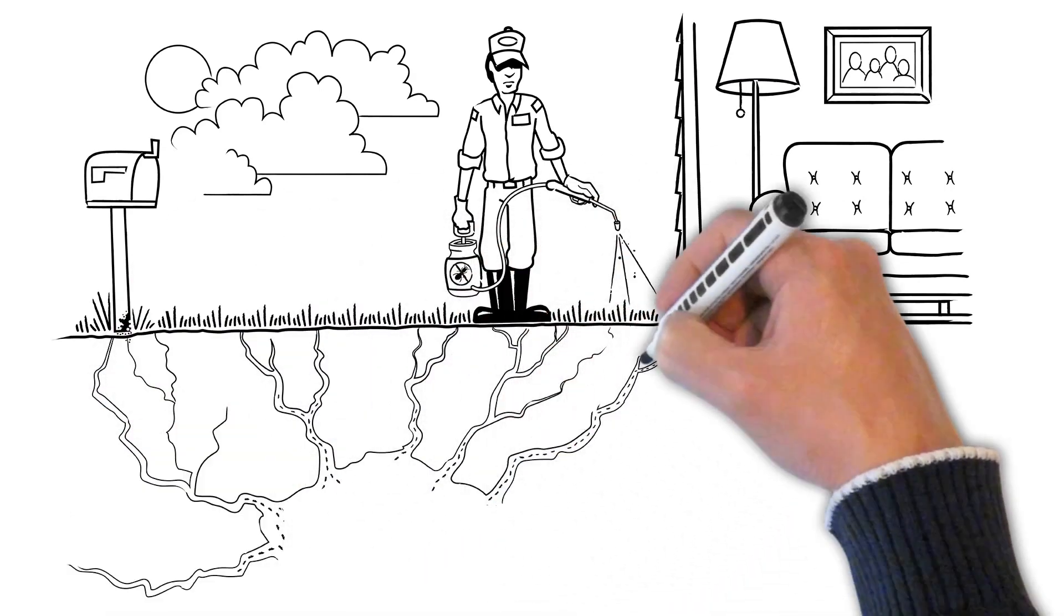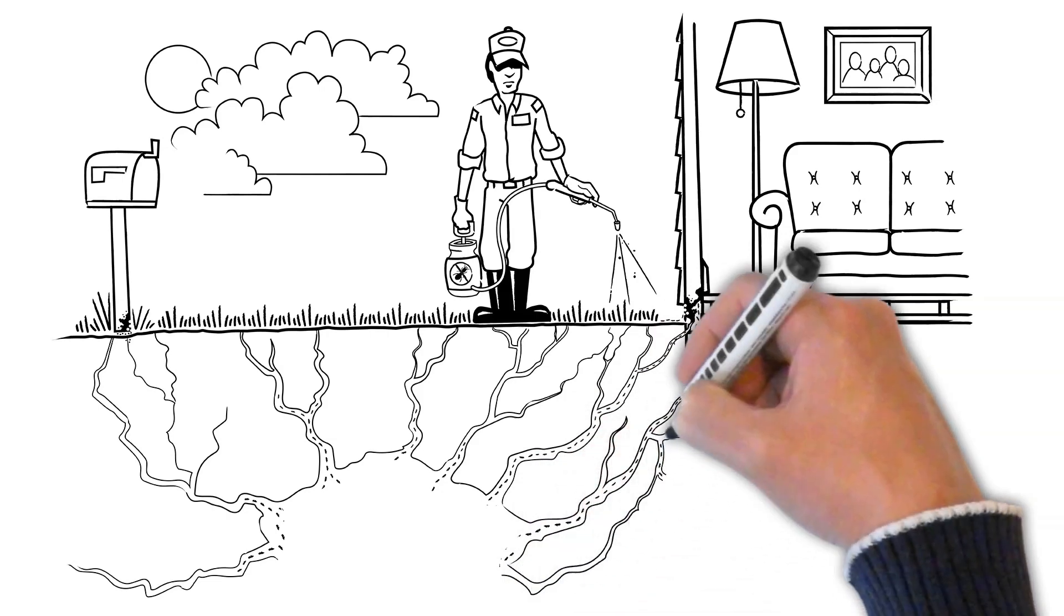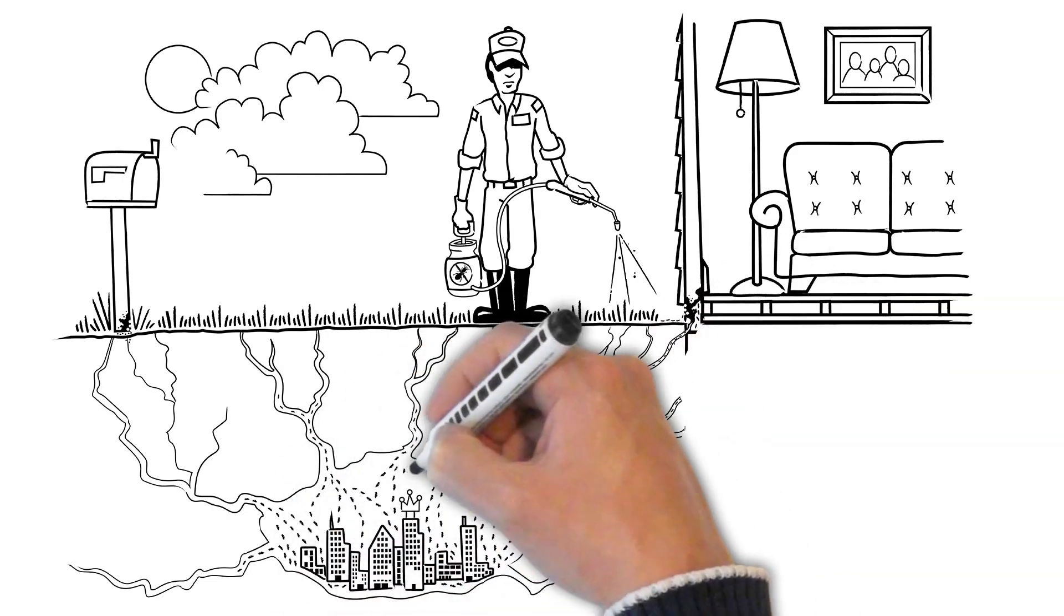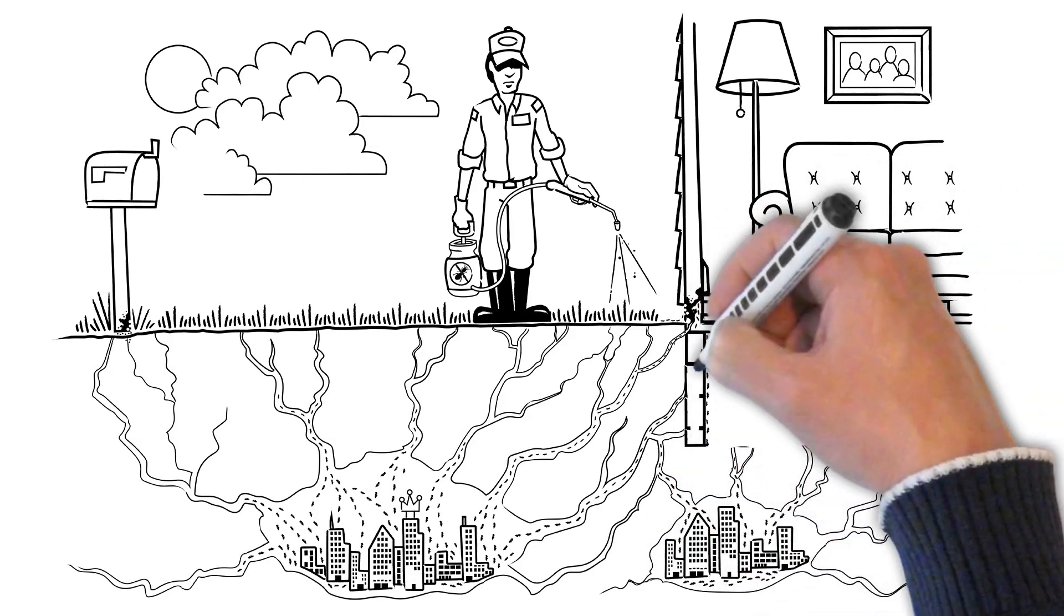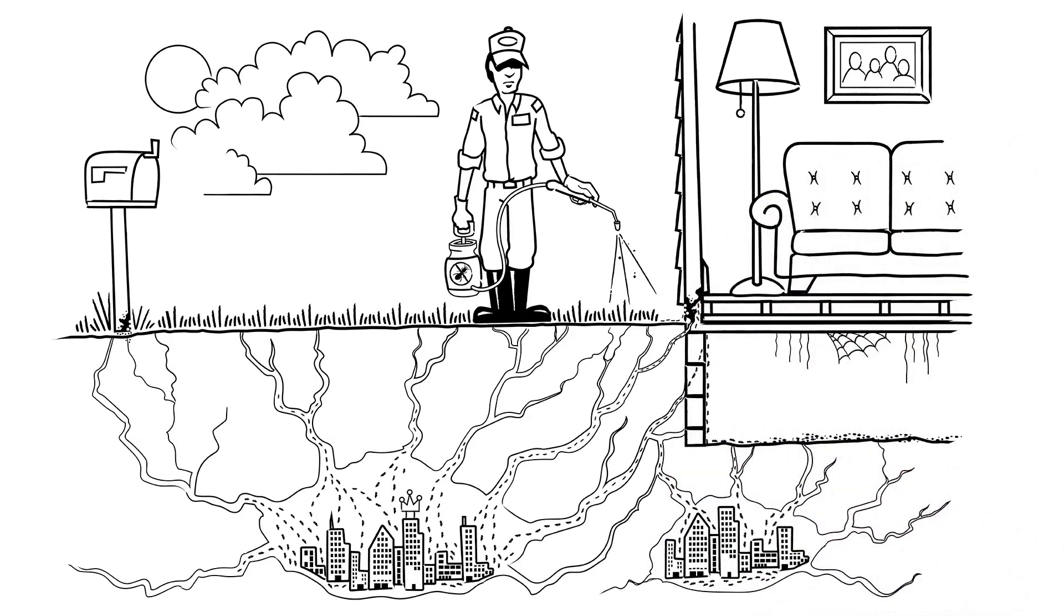The odds are liquid treatments are only going to kill a small fraction of the thousands of food foraging termites, and the ones that remain can go under or around whatever barrier is formed. Likely that colony is going to rebound.